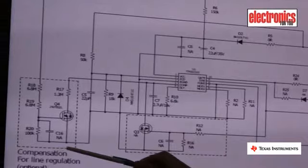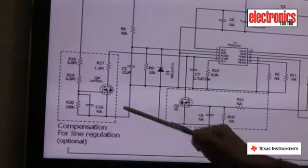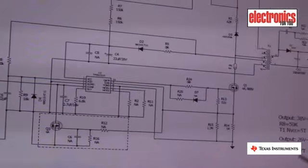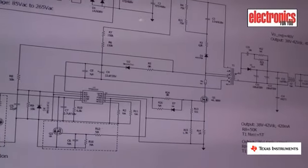Additional circuitry can be added on the primary side to improve the line regulation because now we are not receiving any information from the secondary side. So the line regulation has to be maintained.